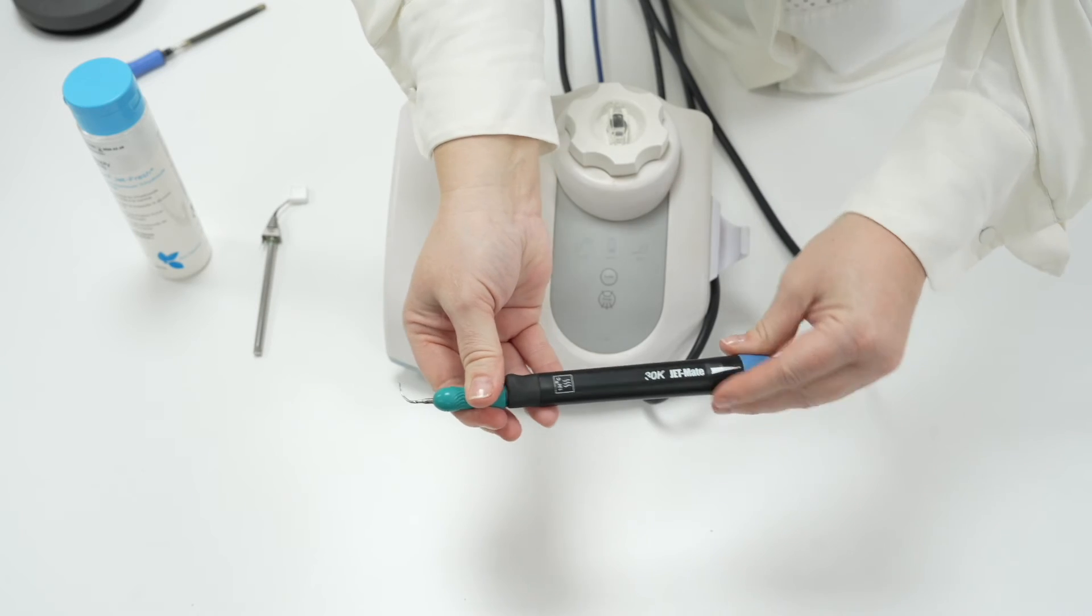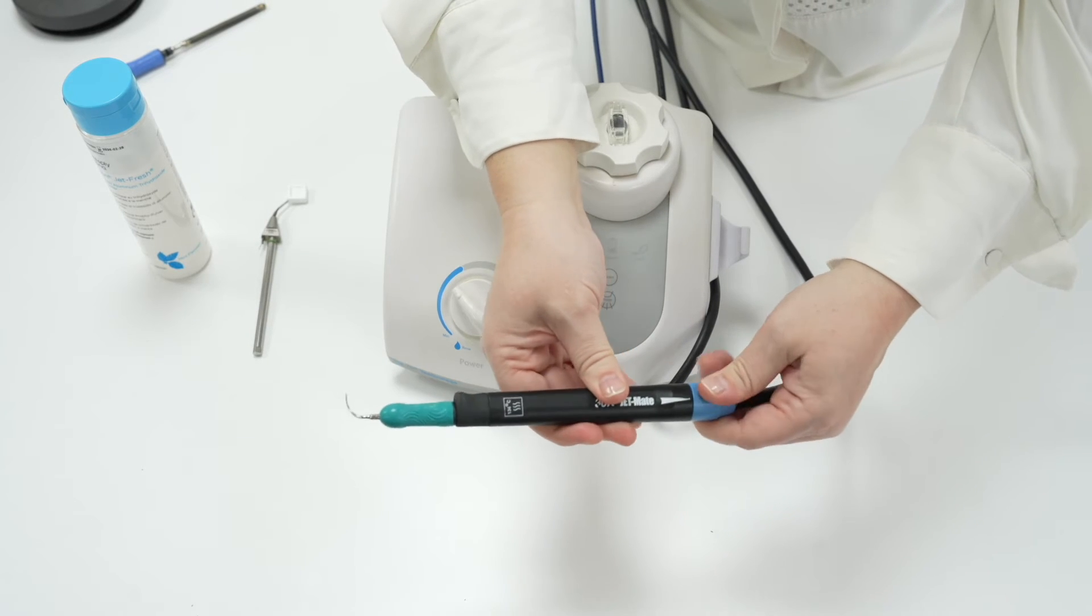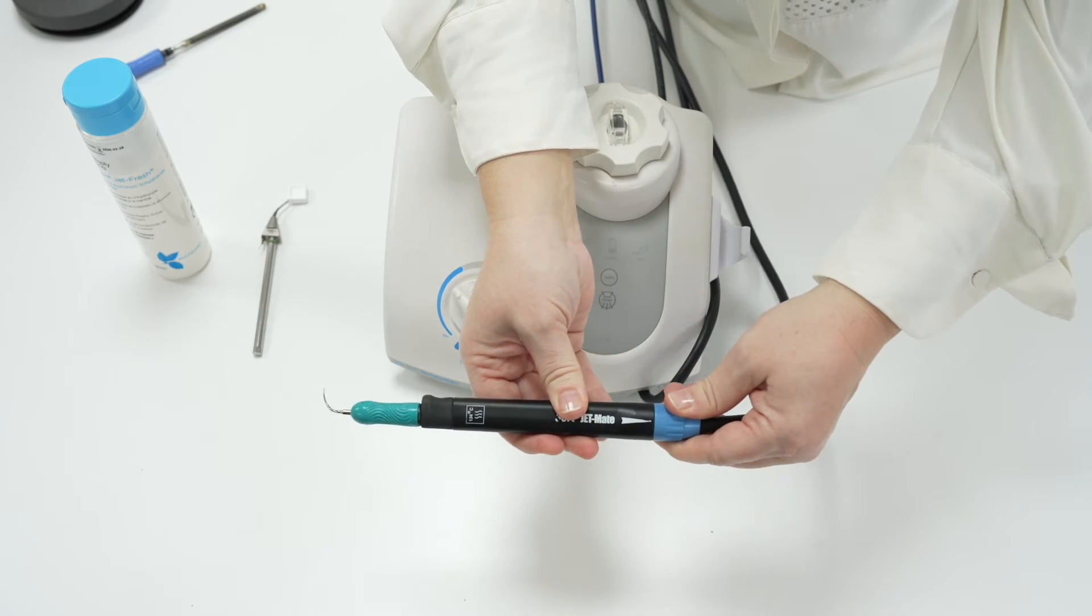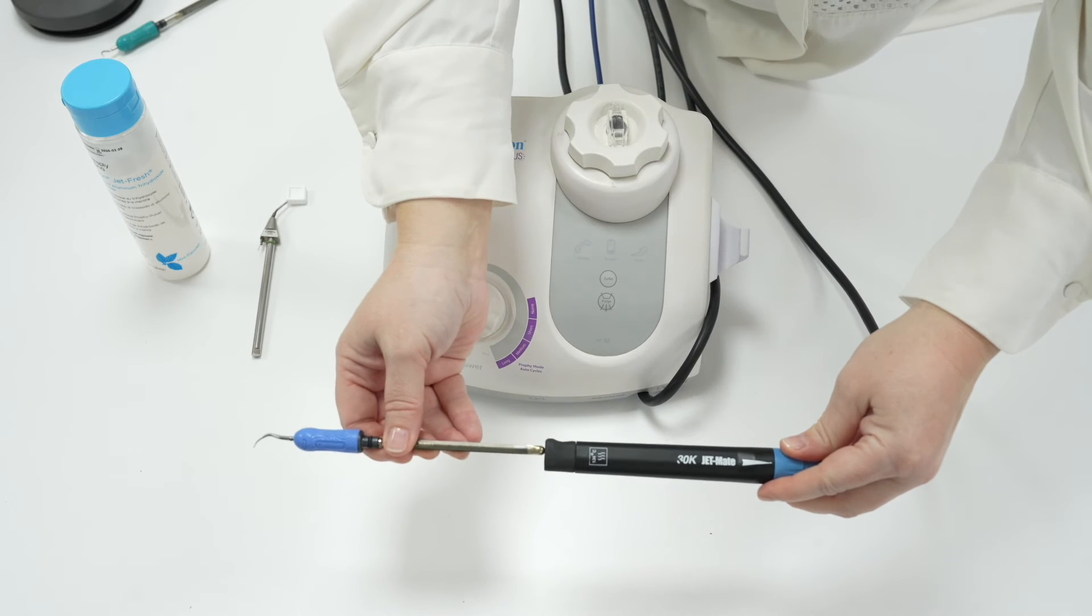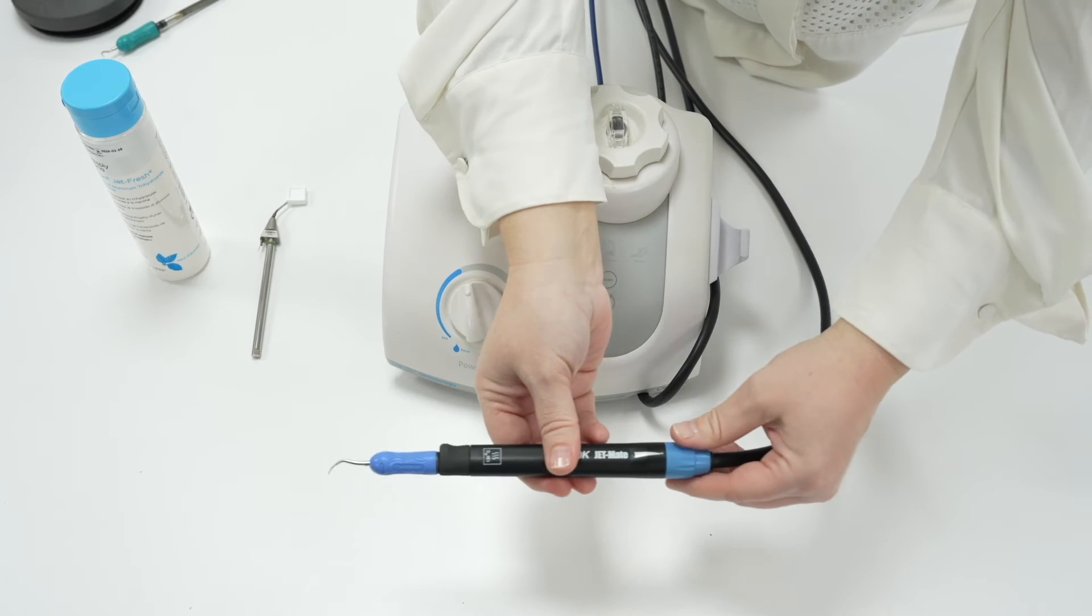Green subgingival periopocket inserts should be used on low power and water, keeping the dial in the blue zone. Blue inserts which are from light to heavy supragingival deposits should be used on medium to high power.